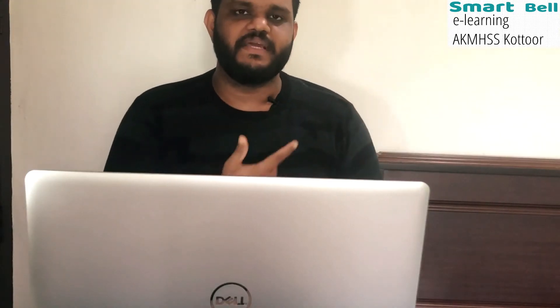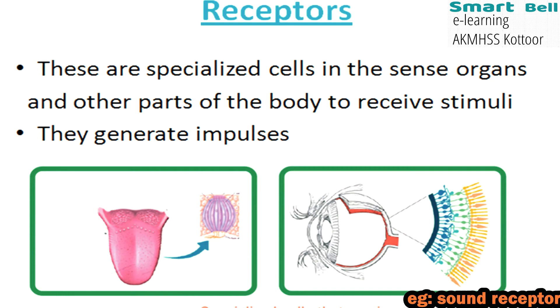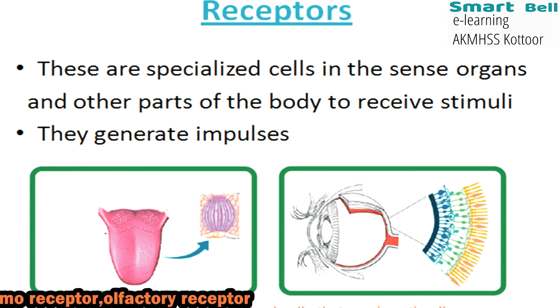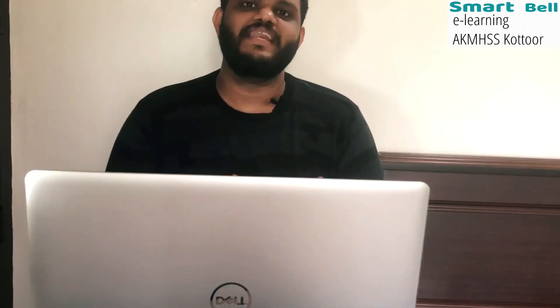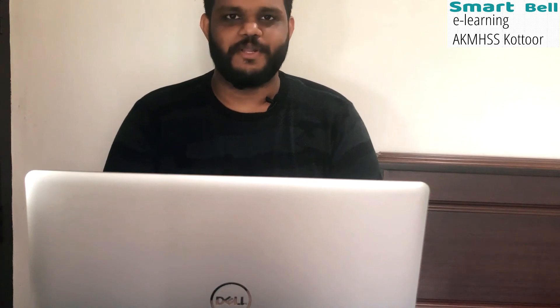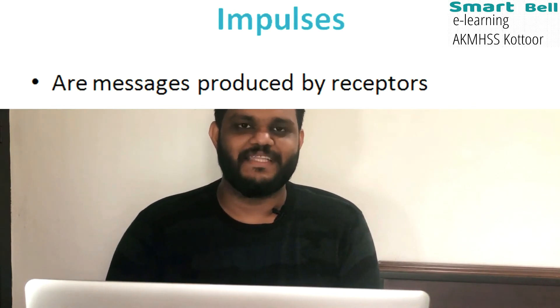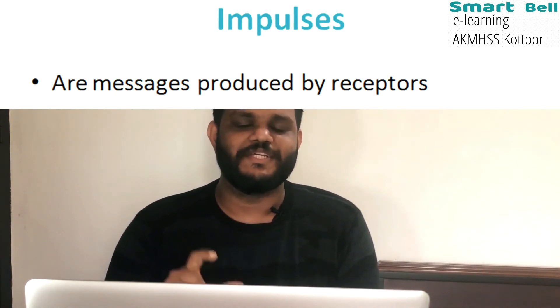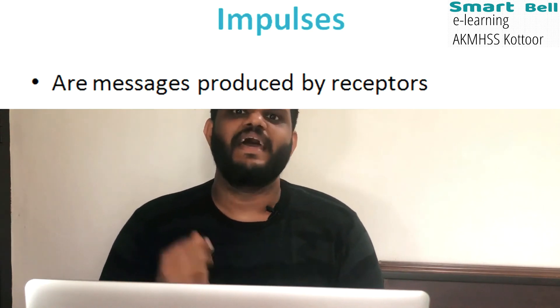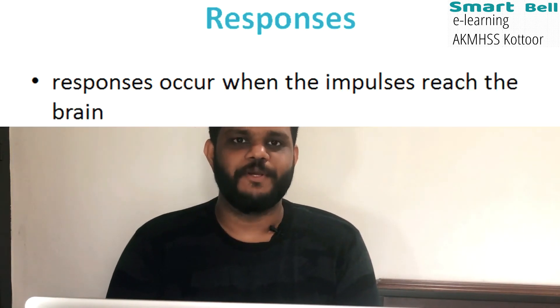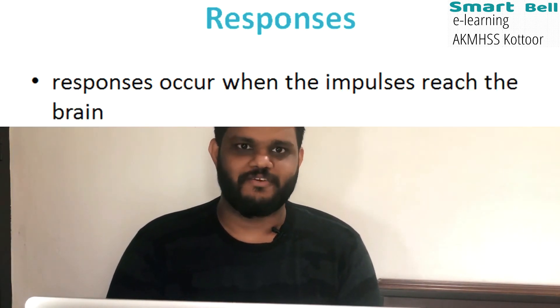Here you can see the picture of some receptors. What is the function of these receptors? These receptors will produce some messages, and these messages will be carried into the brain. The brain will analyze this message, which helps in the proper functioning of the sense organs. The messages produced by these receptors are known as impulses. Once these impulses are produced, proper responses will be acquired from the sense organs.